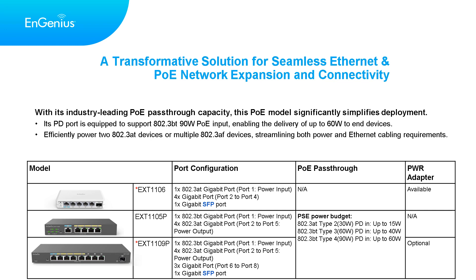The EXT1109P is equipped with one 802.3 BT Gigabit port supporting power input on port 1, 4 802.3 AT Gigabit PoE output ports from port 2 to port 5, 3 Gigabit non-PoE ports from port 6 to port 8, and 1 Gigabit SFP port. You can use the Ingenius 802.3 AT or 802.3 BT PoE injector in either 30-watt, 60-watt, or 90-watt options.